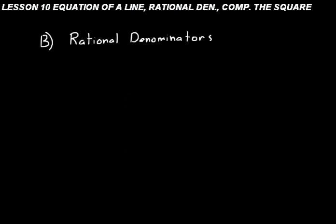Let's move on to Part B on rational denominators. A rational number is one that can be written as a ratio of integers. For example, 4 can be written as 4 over 1 — rational. The square root of 3 is not rational because it equals approximately 1.732 and the decimal places continue forever with no way to express it as a ratio of integers.